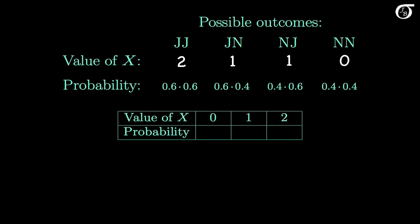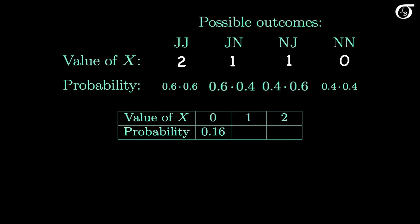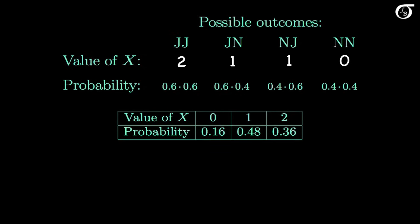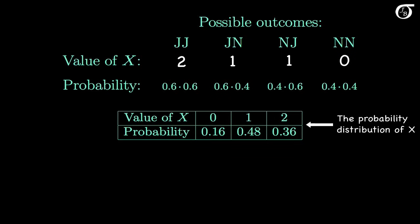Now let's summarize that in a table. The random variable x can take on three possible values: 0, 1, and 2. The probability x takes on the value 0 is 0.4 squared, or 0.16. The probability x takes on the value 1 is the sum of those two middle probabilities, which works out to 0.48. And the probability x takes on the value 2 is 0.6 squared, or 0.36. We've listed out all possible values of x and their probabilities — this is the probability distribution of the random variable x.